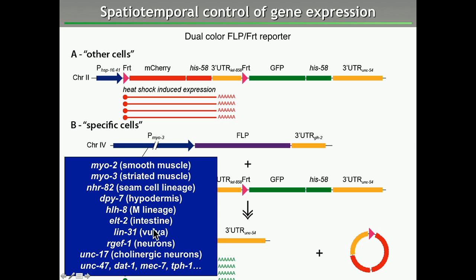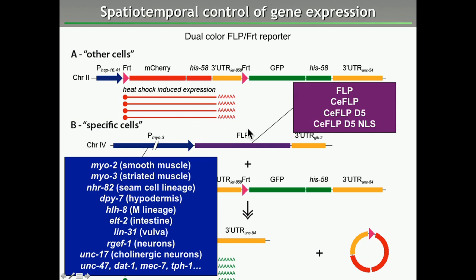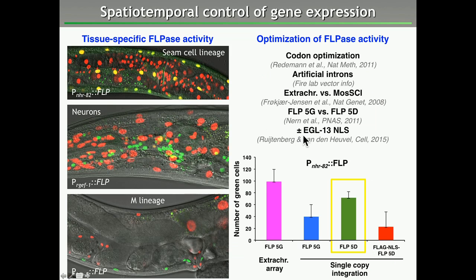We have been optimizing flipase activity to achieve the highest recombination efficiency. We ended up going for a single-copy integration of the flipase — specifically a variant with an aspartic acid at position five. In confocal images of heat-shocked animals, in the seam cell lineage using the NH82 promoter we get many yellow cells indicating recombination of a single allele. In neurons using the RGF1 promoter, or using the M-lineage promoter, we get complete conversion of both alleles — giving high specificity and high efficiency.